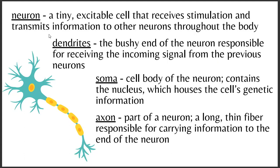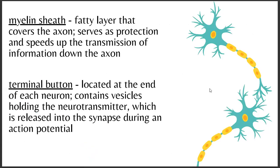Neurons communicate with one another: dendrites receive information and pass it on to the next neuron. The soma — the largest part — is the body of the neuron and contains the nucleus, which houses the cell's genetic information, telling it how to form. The axon is the long part responsible for carrying information to the end of the neuron so it can transfer to the next neuron. The myelin sheath is a fatty layer covering the axon that protects it and speeds up information transmission — it kind of jumps, skipping travel time.